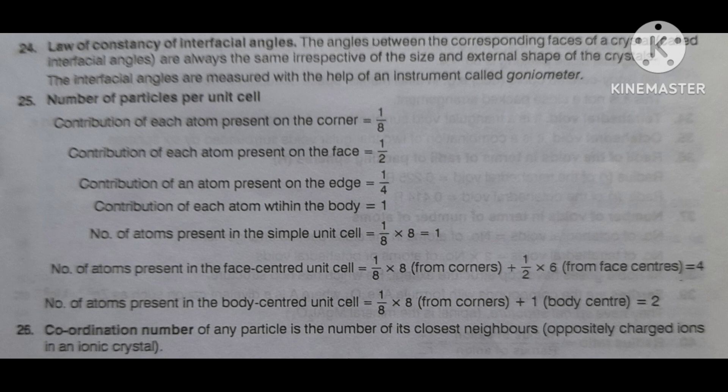The fifth system is triclinic. Here all three lengths are not equal: A ≠ B ≠ C. And all angles are different — α ≠ β ≠ γ, and none of them equal 90 degrees. In this case, only one unit cell is found: simple.